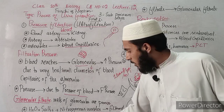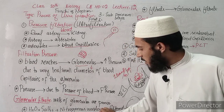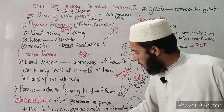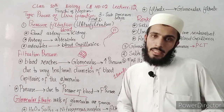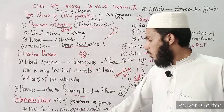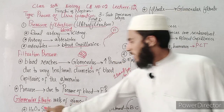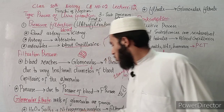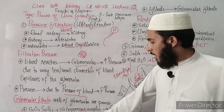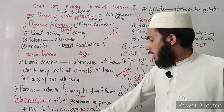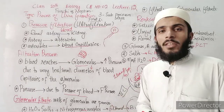Blood cells and plasma proteins are not filtered. Water, salts, and nitrogenous waste are filtered. So the filtrate contains water, salts, and nitrogenous waste, but blood cells and plasma proteins remain in the blood and are not filtered out.